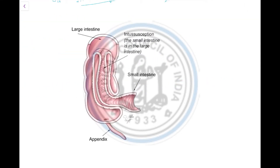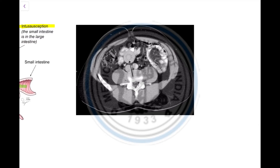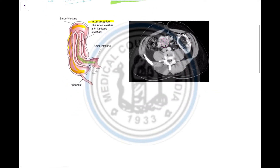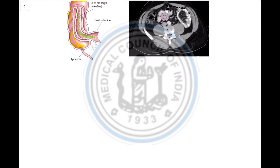Here is the large intestine and here is the small intestine — intestine inside intestine. This is called intussusception, where the small intestine telescopes into the large intestine, giving a characteristic appearance of intestine within intestine. For this intussusception, we need urgent hydrostatic reduction.